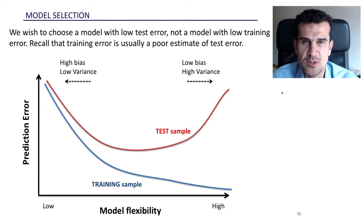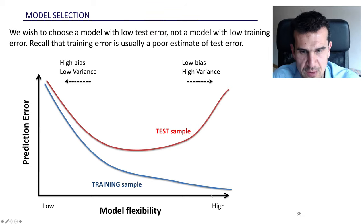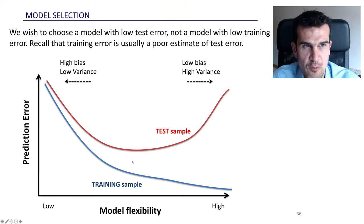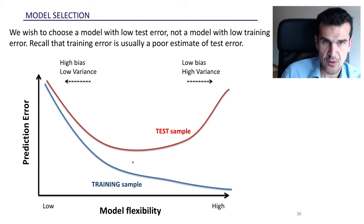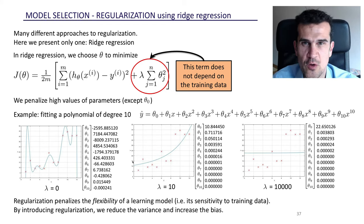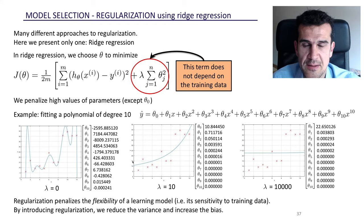Regularization is a technique that allows us to move up and down the flexibility scale — this spectrum of models — with one single parameter. We're going to call that parameter lambda, and with it we'll be able to test different models and select the best one with the lowest test error. In this video we'll focus on one specific regularization technique called Ridge regression, though other approaches like Lasso regression also exist.